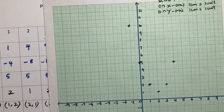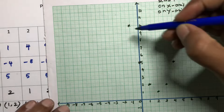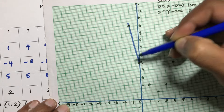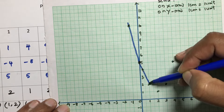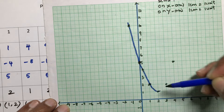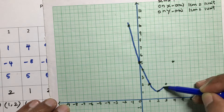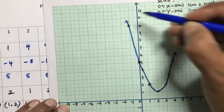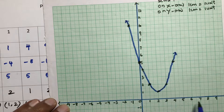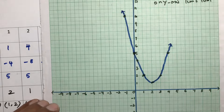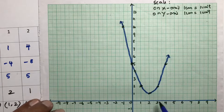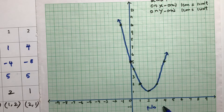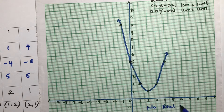Now I join all these points with a smooth curve. You can see the graph does not cut the x-axis at any point. Therefore, the answer is: no real zeros.